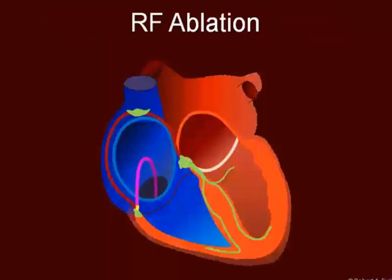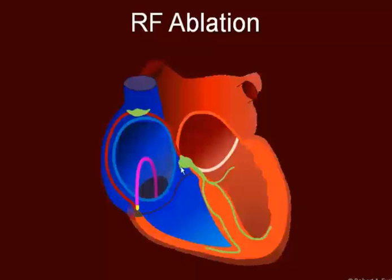One of the techniques used to correct this is called RF ablation. In this procedure, we place a catheter with a tip that can be heated by high frequency radio waves. That heat will then destroy the tissue and leave behind scar tissue. The tip is heated and scar tissue is left behind. This procedure can also work on the slow pathway in an AV nodal re-entry tachycardia.